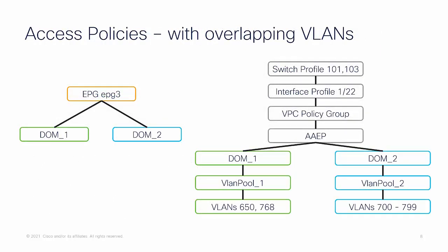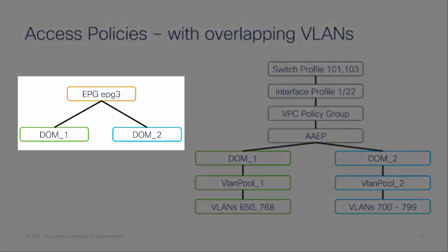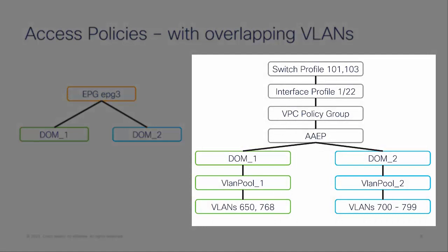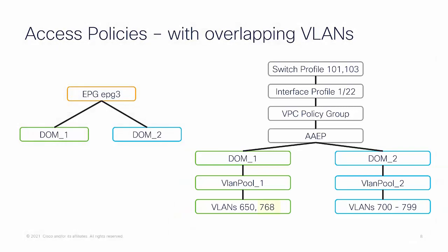We can refer to these diagrams as a representation of the configured EPG policies. On the left, we can see that EPG 3 has a relationship to both DOM1 and DOM2. On the right, we have a simplified view of the completed access policies for the switches and VLAN in question. From this diagram, VLAN 768 of VLAN pool 1 is overlapping with the range of VLANs from VLAN pool 2.